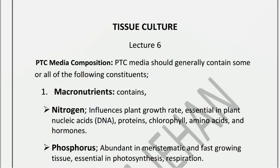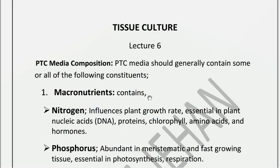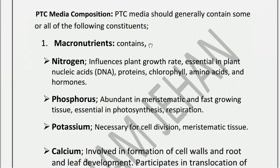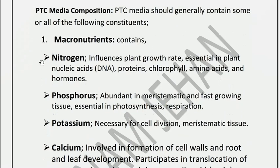Plant tissue culture media should generally contain some or all of the following constituents. First is macronutrients. Macronutrients are required in large amounts. Micronutrients are required in small quantities. The macronutrients include nitrogen, phosphorus, potassium, calcium, iron, and magnesium.